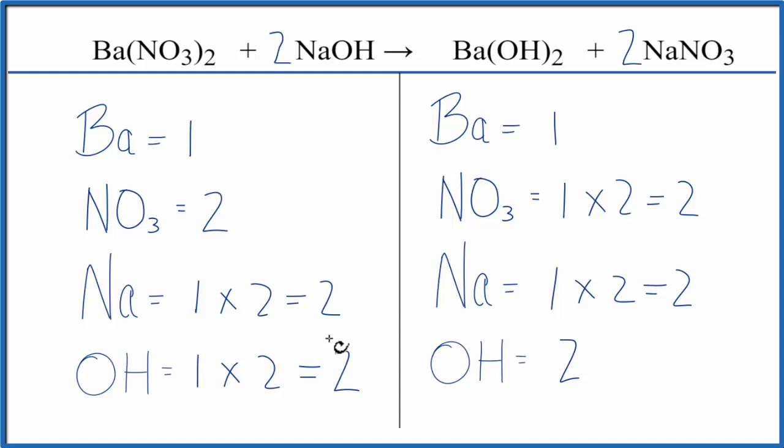This equation is balanced. So when we count these polyatomic ions as just one item when they appear on both sides, that makes the balancing a lot easier and you're less likely to make mistakes. This is Dr. B with the balanced equation for barium nitrate plus sodium hydroxide. Thanks for watching.